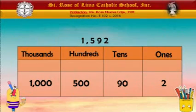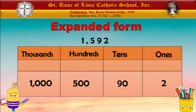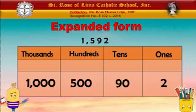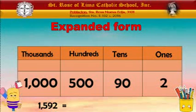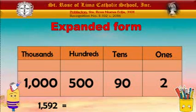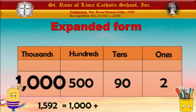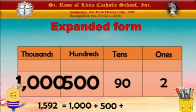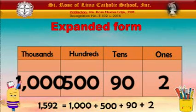Now let's move on to expanded form. How are we going to expand a number? We are going to expand a number using its value. For example, to expand 1,592, we look at its values: 1,000, 500, 90, and 2. We start with the biggest place value, which is the 1,000s, and write 1,000 plus. Next is hundreds: we write 500 plus. Then tens: we write 90 plus. And last is the ones, which is 2. So we just write 2.